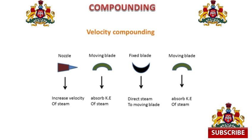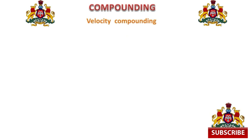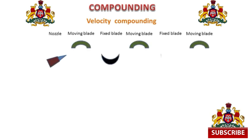Now we discuss the velocity and pressure graph for velocity compounding. In velocity compounding, the arrangement of nozzle, moving blade, and fixed blade is in this order: firstly a nozzle, then a moving blade, then a fixed blade, then a moving blade, then a fixed blade, and a moving blade. These are the combination of stages in velocity compounding.